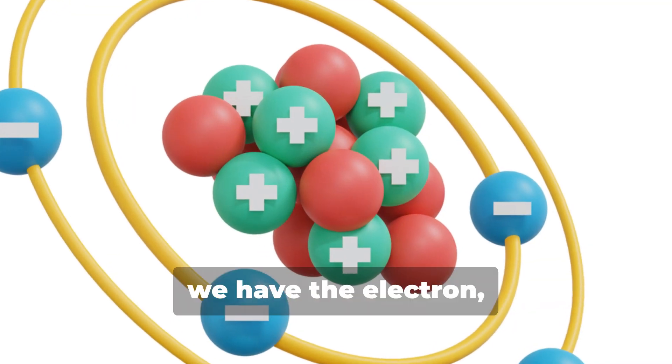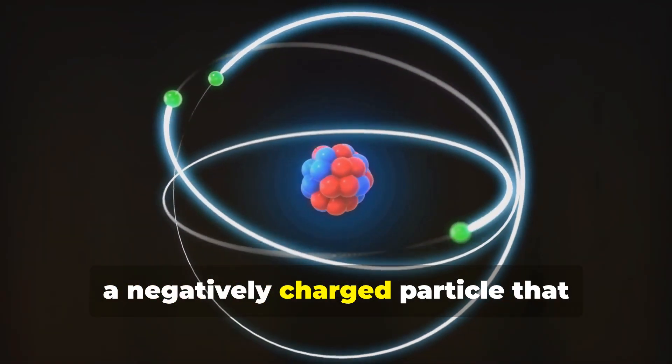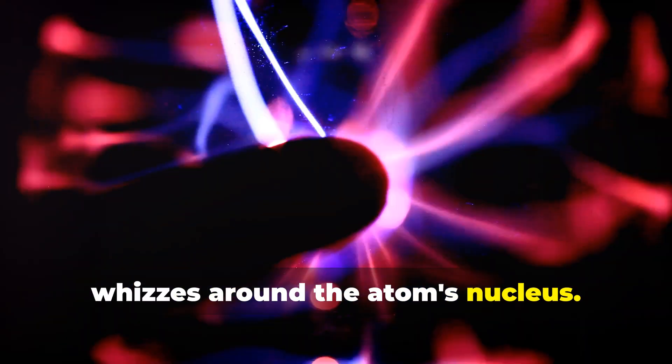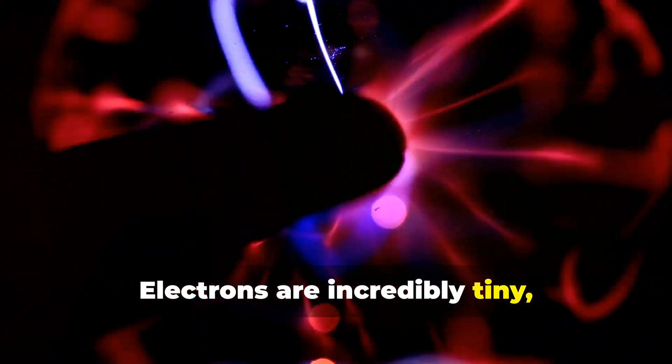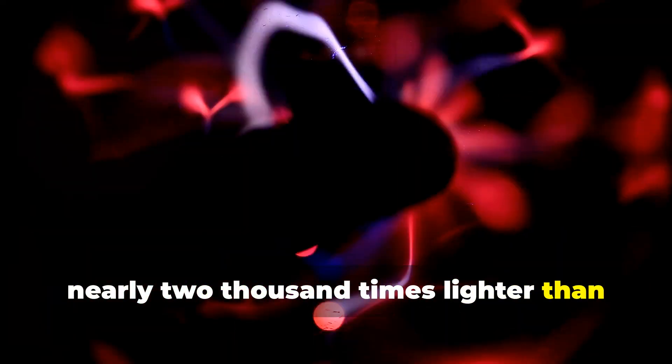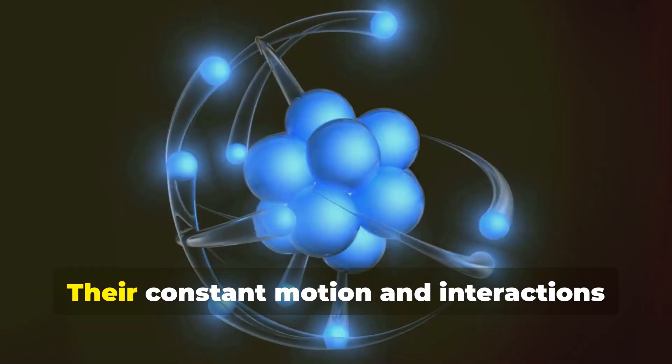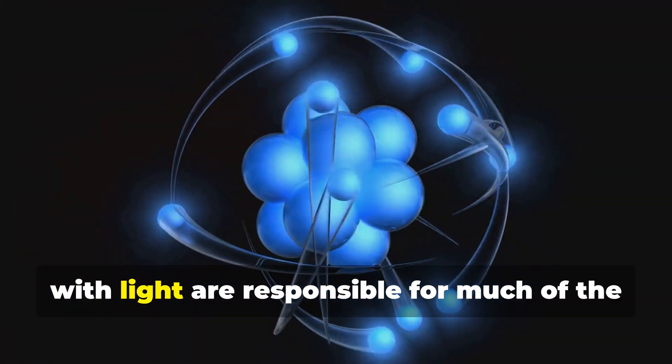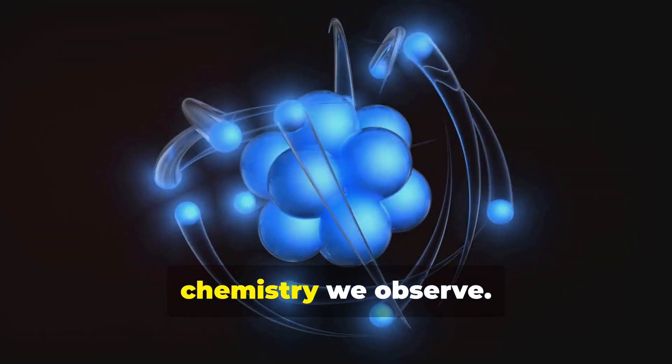First up, we have the electron, a negatively charged particle that whizzes around the atom's nucleus. Electrons are incredibly tiny, nearly 2,000 times lighter than the smallest atom, hydrogen. Their constant motion and interactions with light are responsible for much of the chemistry we observe.